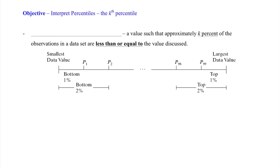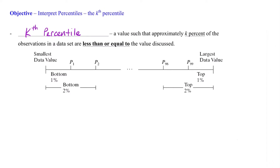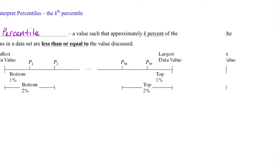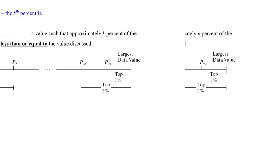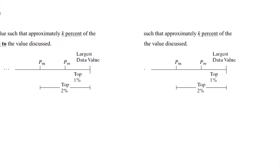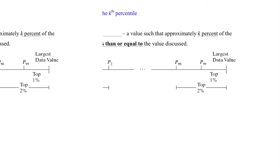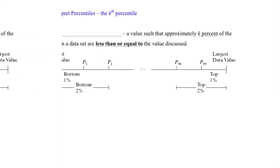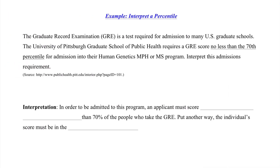Our next objective is the idea of percentiles, and more specifically what our textbook calls the k-th percentile. The k-th percentile is a value such that approximately k percent of the observations in a data set are less than or equal to the value discussed. The key part to remember is 'less than or equal to the value.' Let's jump into an example, as it's a lot easier to understand through the example.